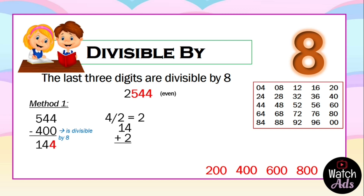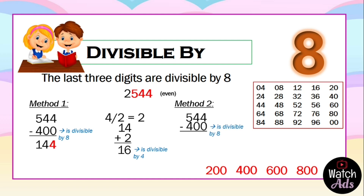Next, take the last digit, 4, divide by 2 to get 2, and add it to 14 — the answer is 16, which is divisible by 8. For Method 2, we take 544, subtract 400 to get 144, then subtract a multiple of 8: 144 minus 80 equals 64, and 64 is divisible by 8. Therefore, 2544 is divisible by 8.